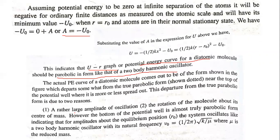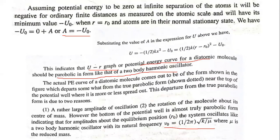A rather large amplitude of oscillation — when vibration is strong — and the rotation of the molecule about its center of mass are the two reasons. The frequency of vibration ν₀ is equal to 1 over 2π times the square root of k over μ. We will calculate and verify the energy level diagram from this frequency of vibration.